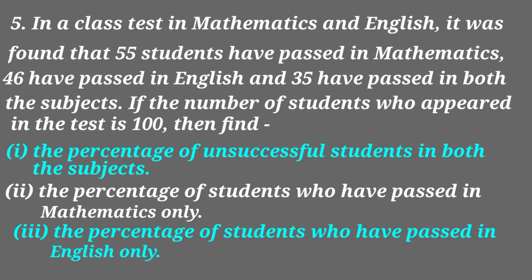Now let us write what is given to us. You can observe that n(M), the number of students who passed in mathematics, is equal to 55. n(E), the number of students who passed in English, is equal to 46, and n(M∩E) is equal to 35.